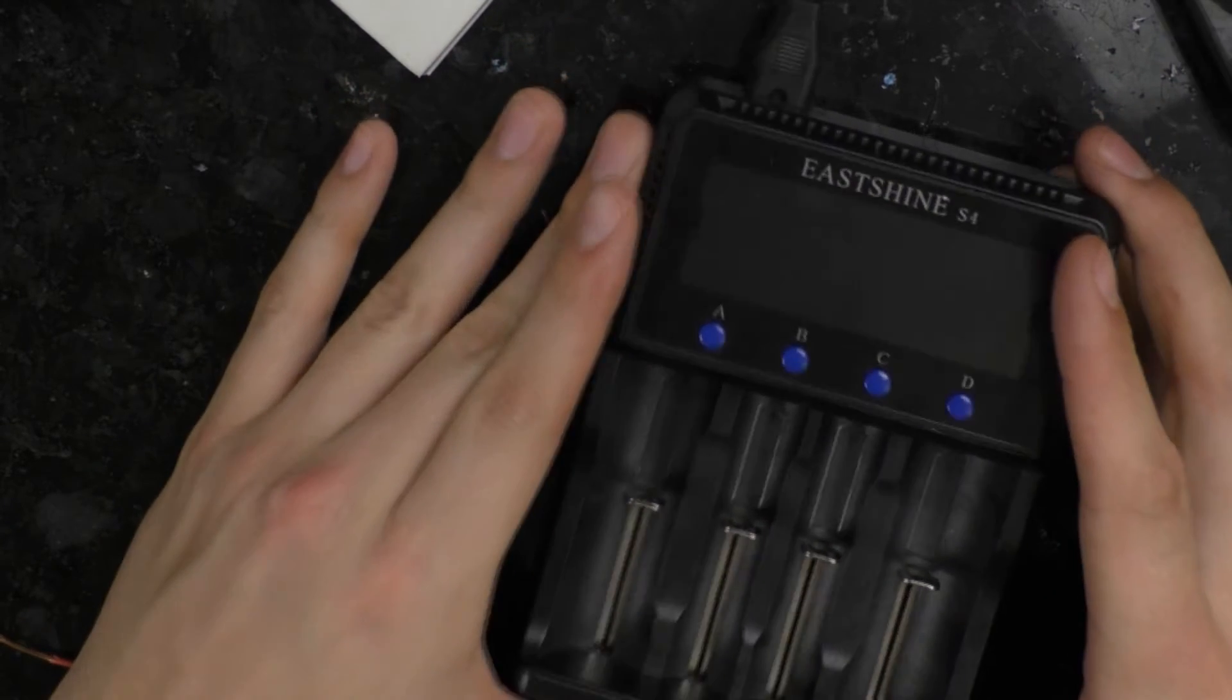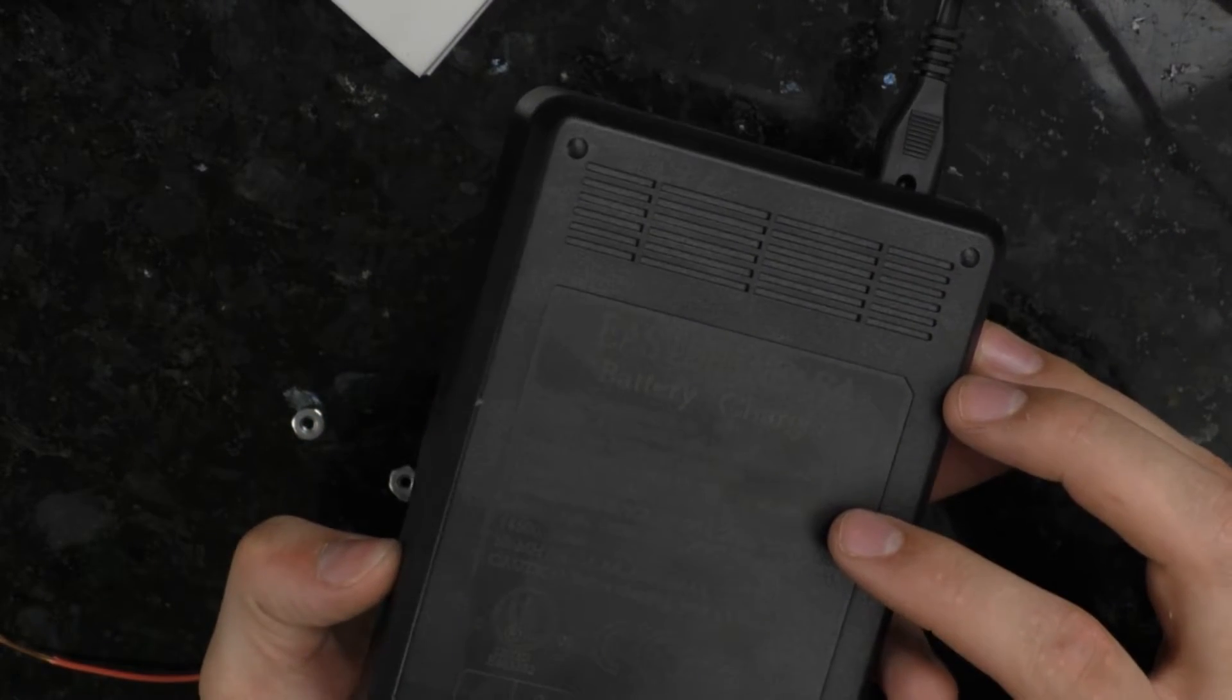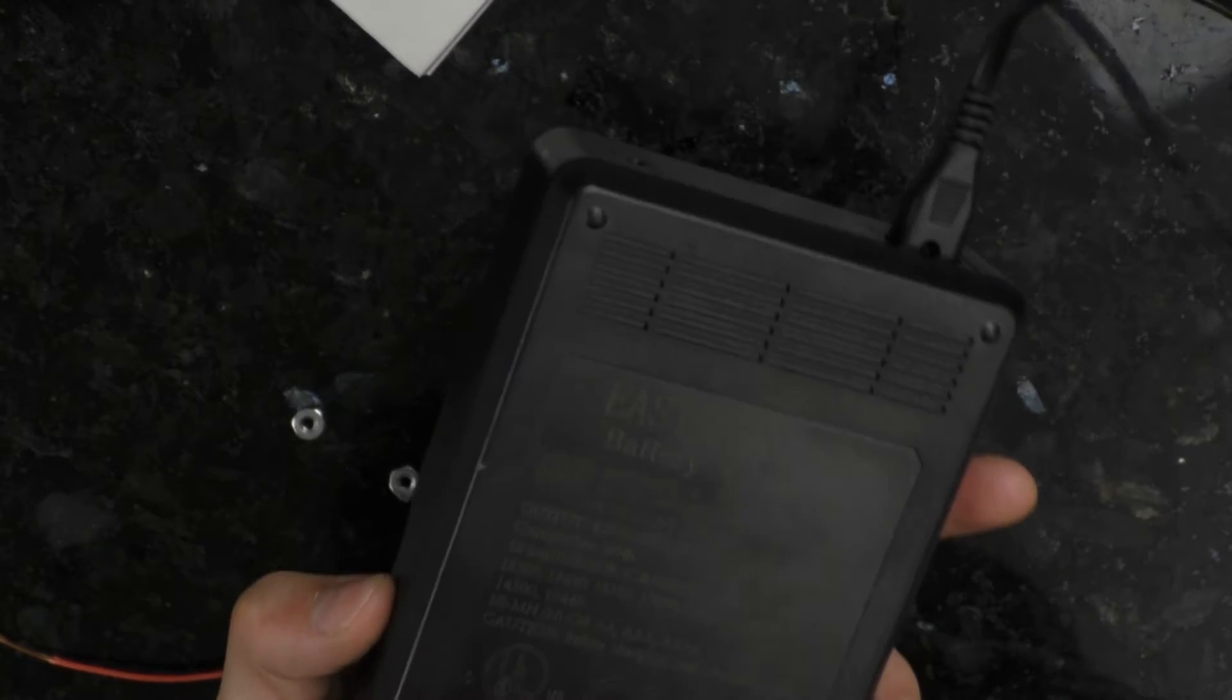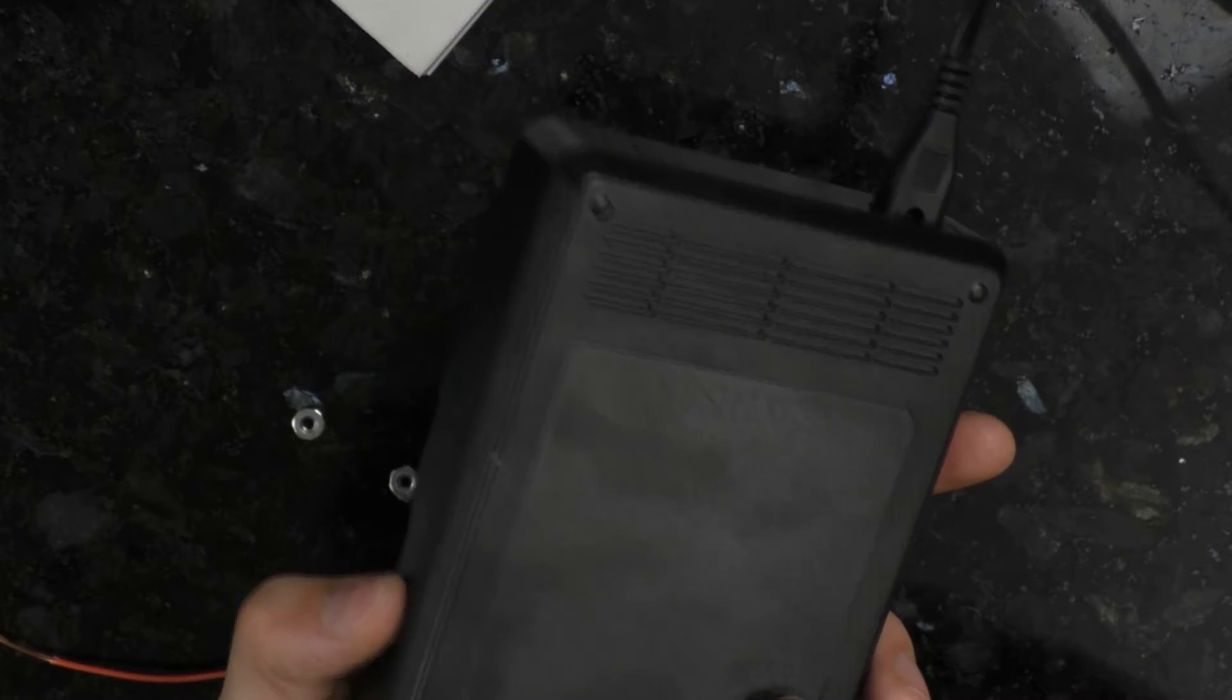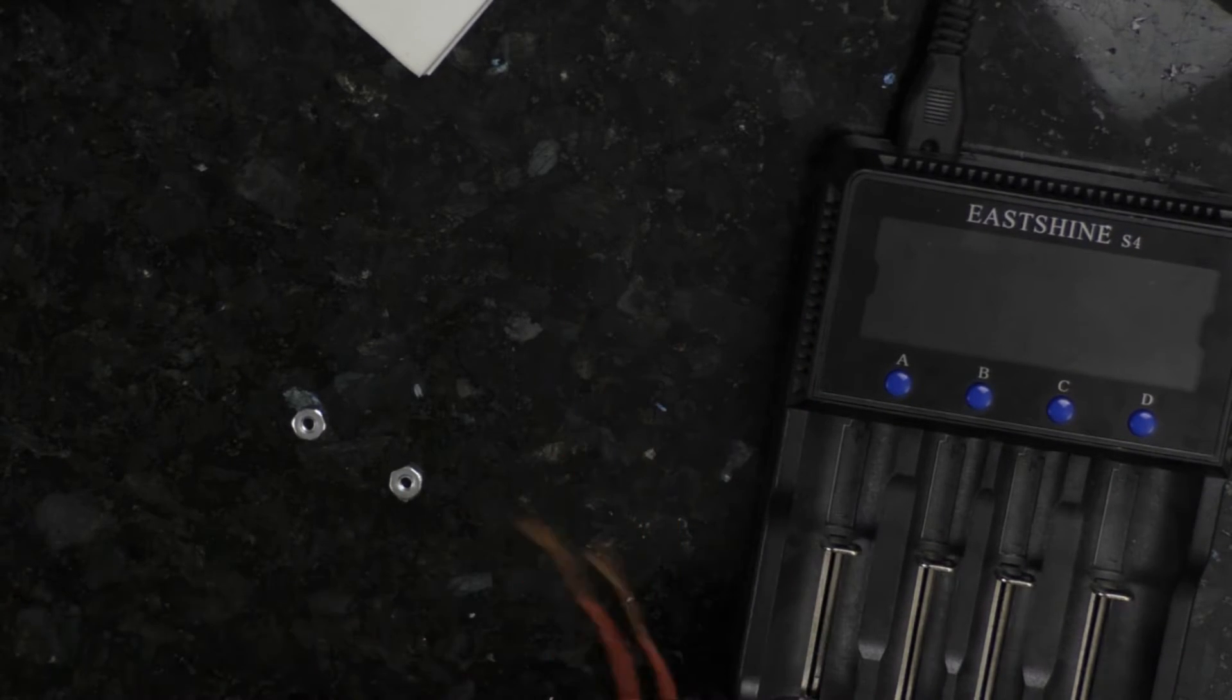Anyways, this is a smart charger. I have it. It's EastShine S4. I'll put a link to it in the description. I'll also put a link to these EBL batteries, which I do recommend. But this battery charger has worked great so far. And like I said, it just does the voltage detection.